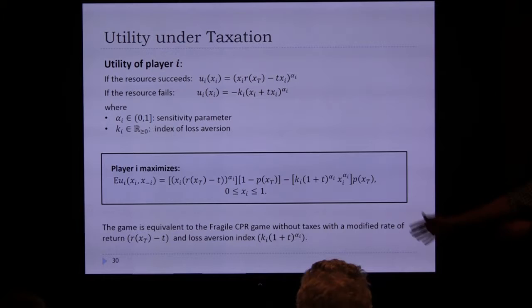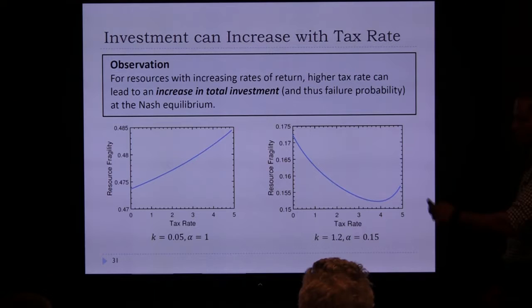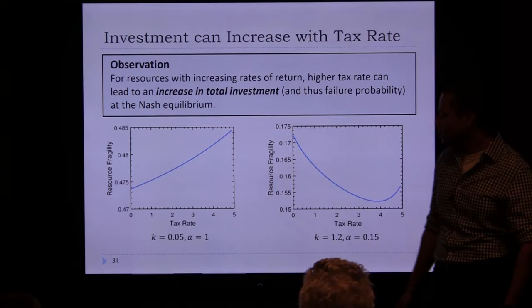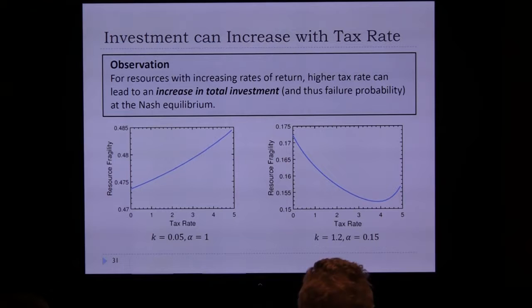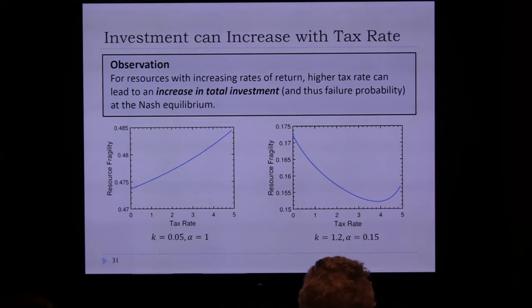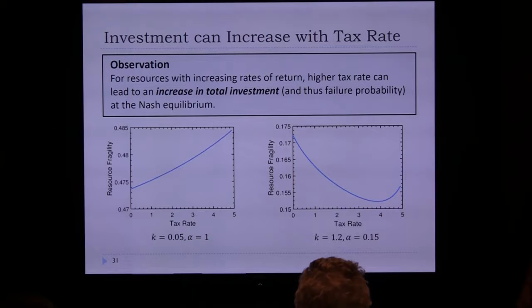Surprisingly, in certain cases charging a tax can actually cause players to use the resource more. For resources with increasing rates of return (economies of scale), players respond to reduced returns by using more of the resource to compensate — exploiting the network effects. If they are gain-seeking and don't care about increased failure probability, they pump more into the resource to offset the tax.